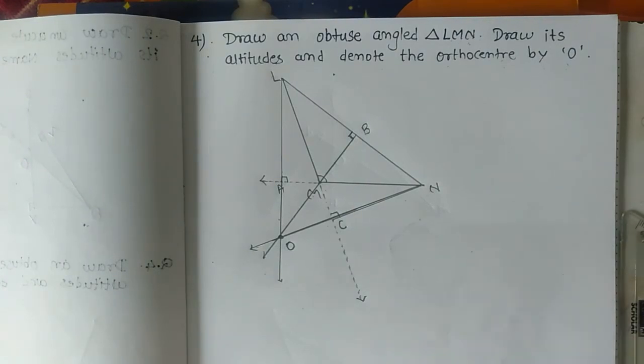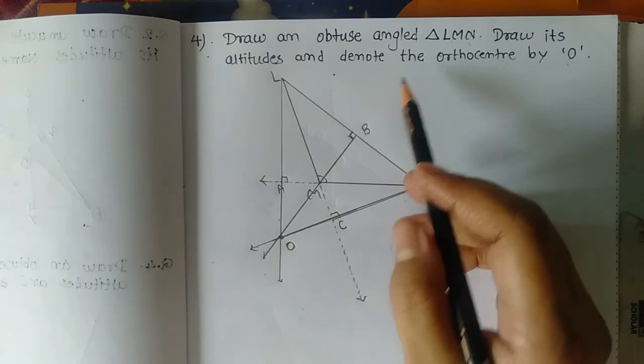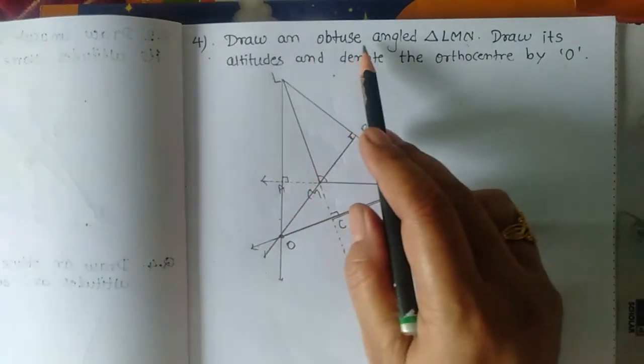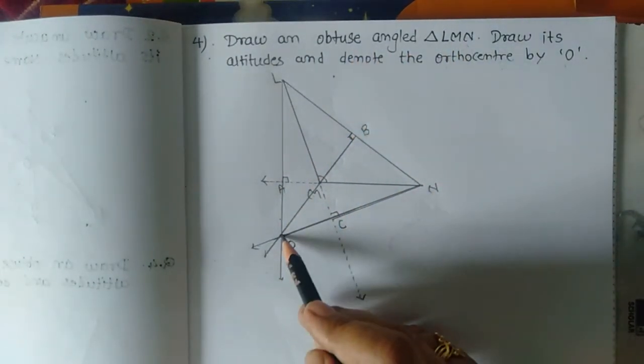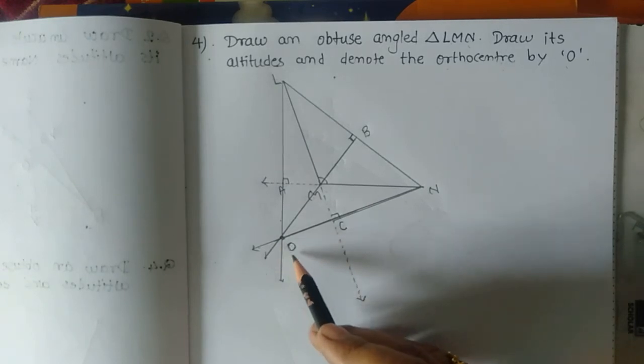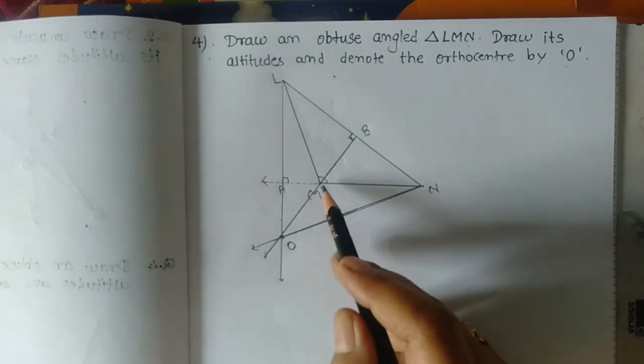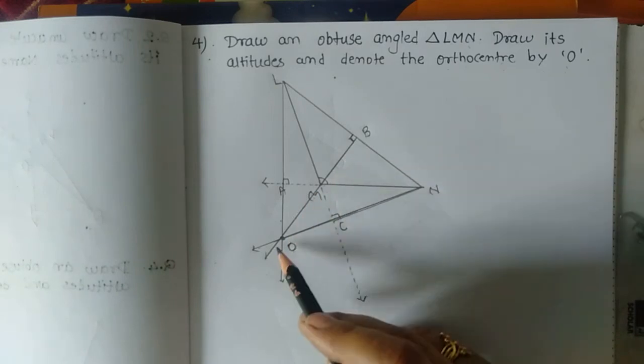The altitudes of an obtuse angled triangle are concurrent to each other, and their point of concurrence lies outside of the triangle.